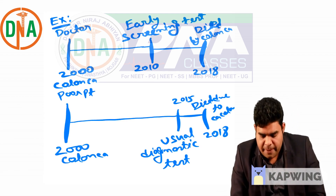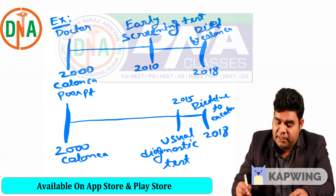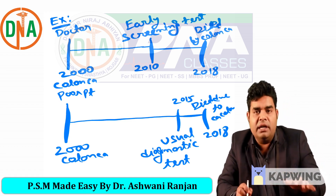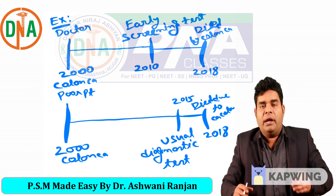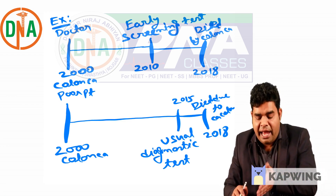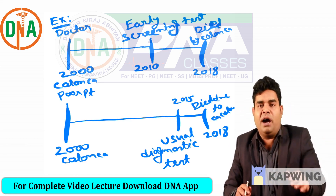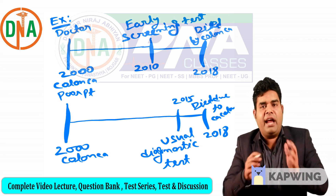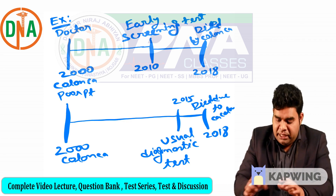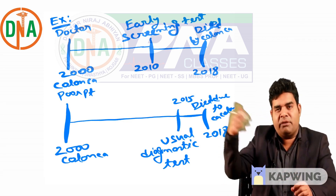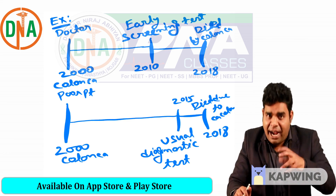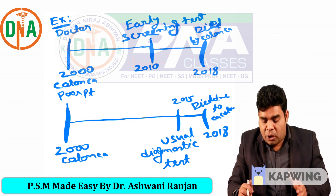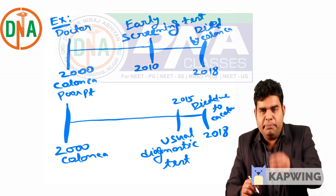This poor patient also died in 2018 due to CA colon. Now the doctor friend's family will think that because of the early screening test, he remained alive for eight years after the diagnosis, whereas other patients usually live only for three years after diagnosis. They will be very happy about this — that we survived for eight years, but other people survived only three years after diagnosis.